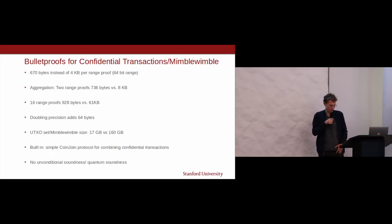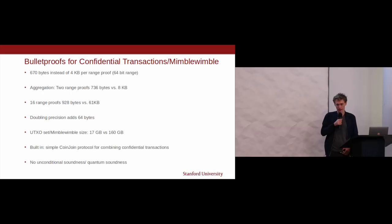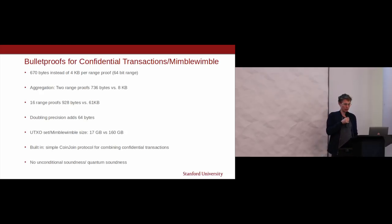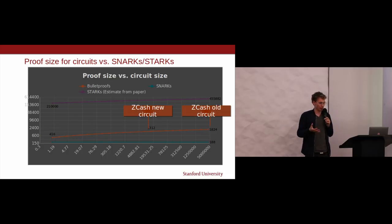One limitation: a quantum computer cannot break the anonymity of the scheme, but it can create fake proofs, which would again create silent inflation. Zcash and Monero have the same problem. There are fundamental reasons why you can't achieve unconditional soundness using current techniques. Bulletproofs work for arbitrary arithmetic circuits, so anything you'd normally apply a SNARK to. For a Zcash transaction circuit of roughly four million gates, the Bulletproof proof size would be 1.8 kilobytes, whereas a STARK proof would be 455 kilobytes, and a SNARK is only 188 bytes.